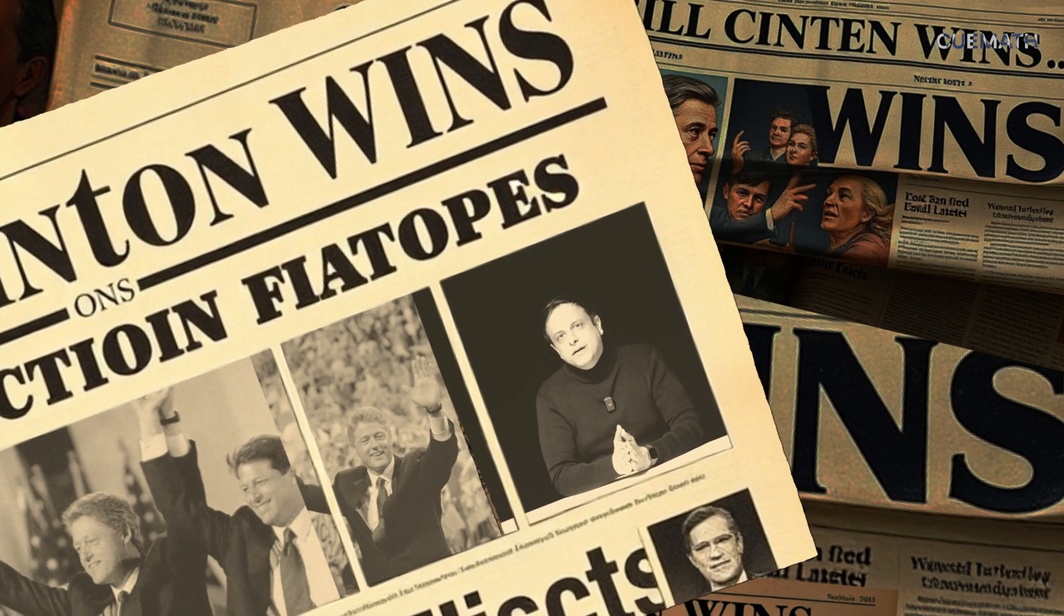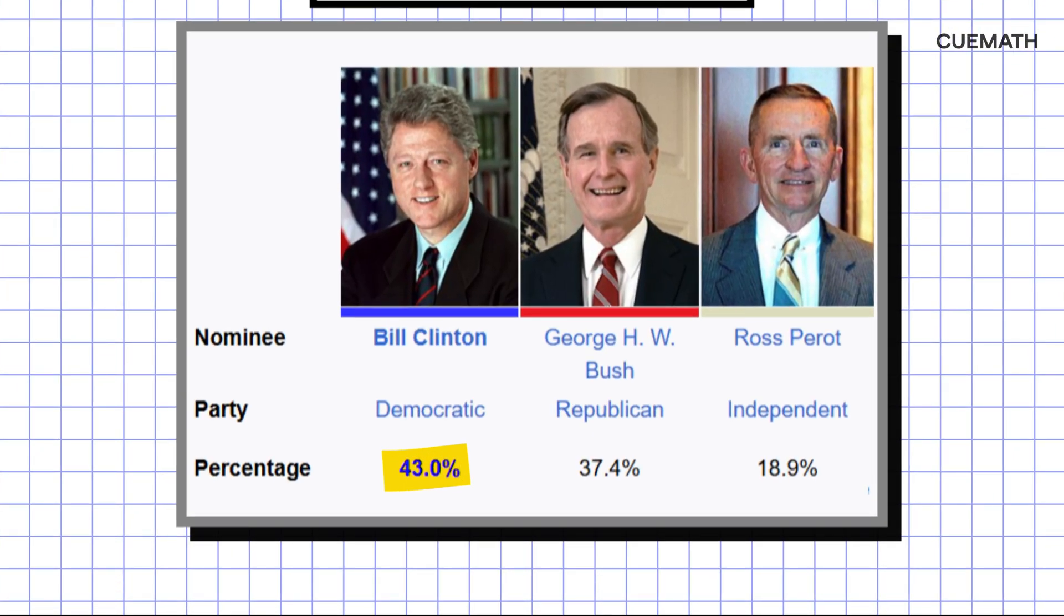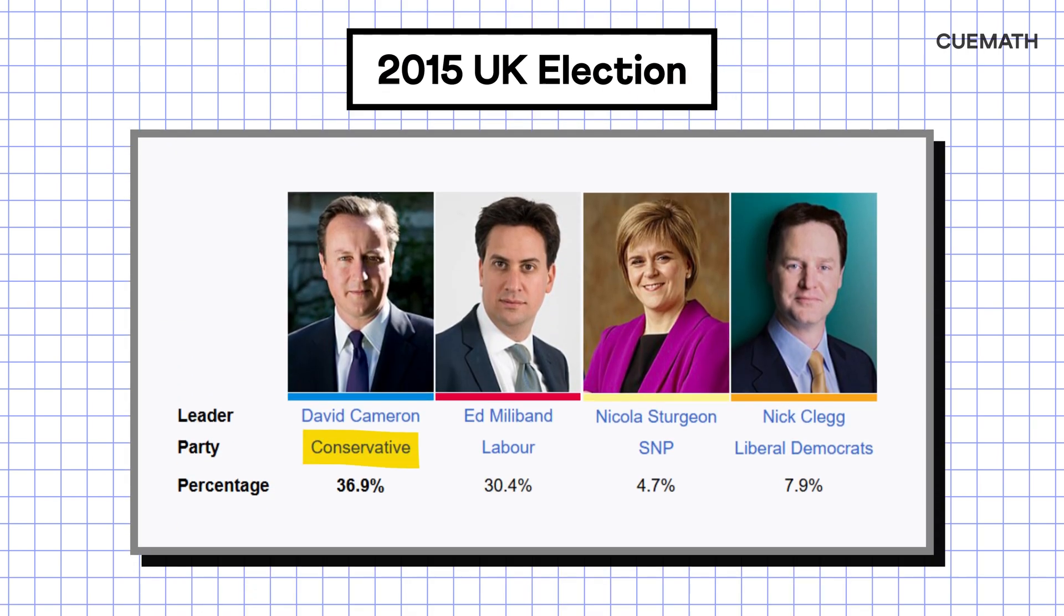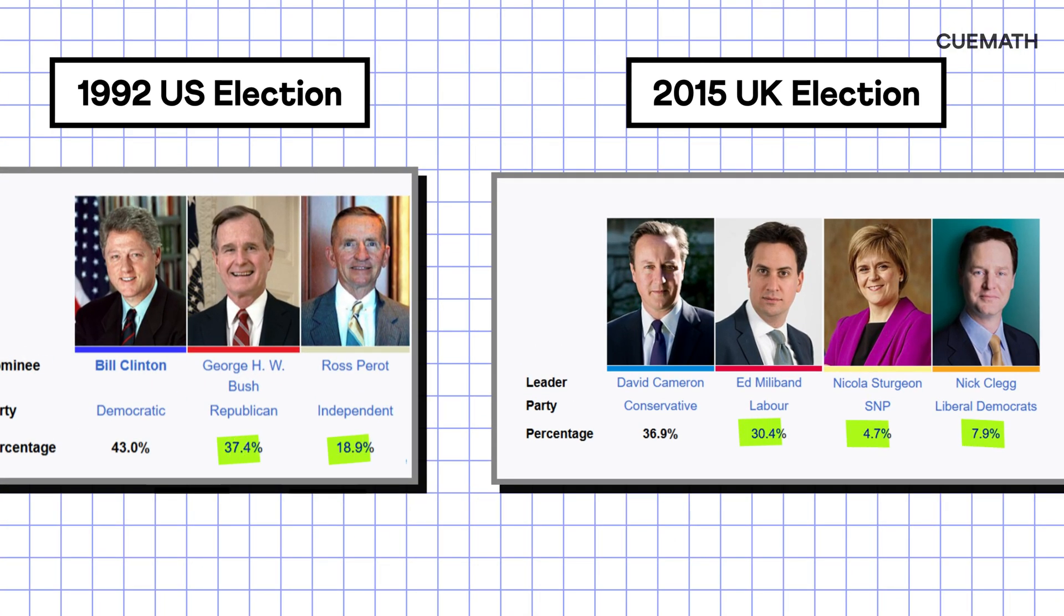For example, Bill Clinton won the 1992 US elections with 43% of the votes, and in the 2015 UK election, the Conservative Party formed a government with just 36.9% votes, both winning despite most voters not choosing them.